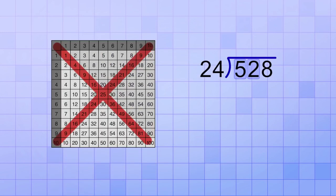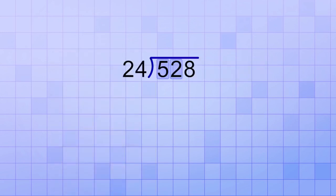This is trickier because multiples of 24 are not on our multiplication table. Instead, we have to figure it out by estimating or good guessing. Because we know that 2 times 25 would be 50, 2 is a really good estimate for the first digit of our answer. 2 times 24 is 48, and then when we subtract 48 from 52, we get a remainder of 4. Okay, so far so good.